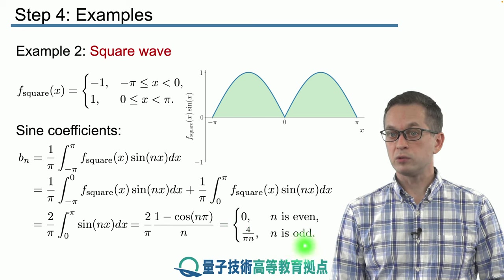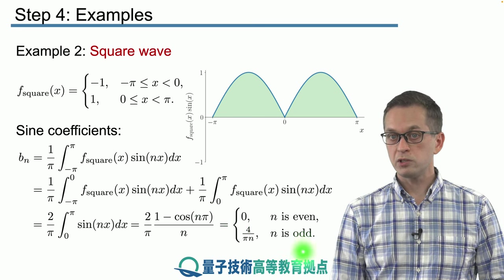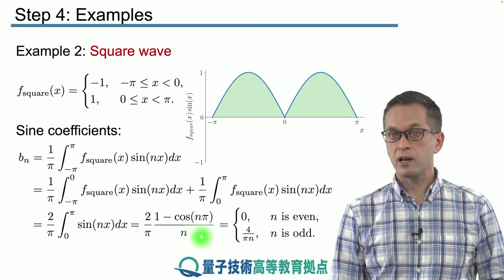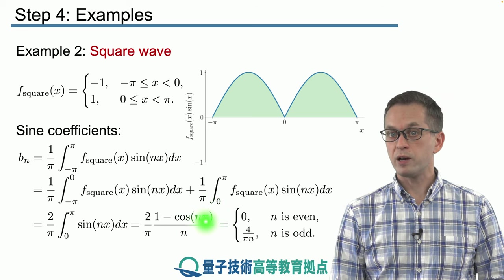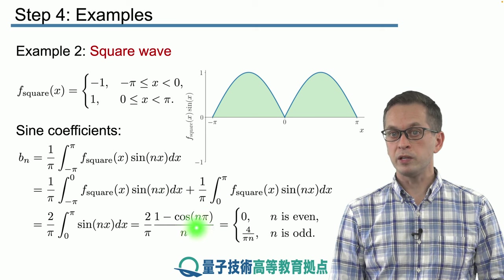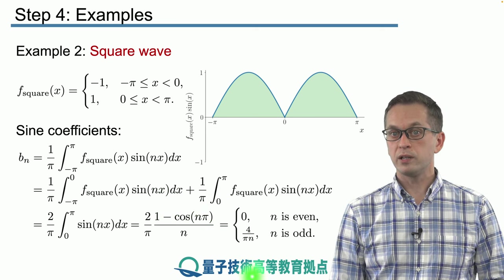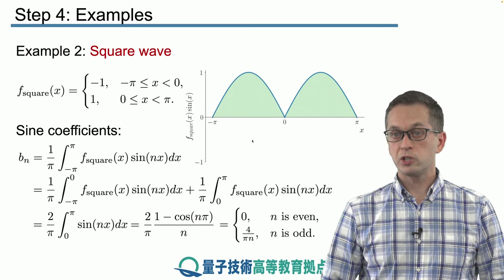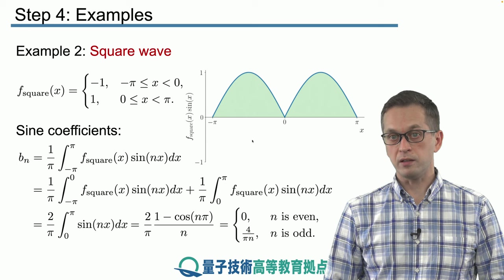Whereas when n is an odd integer, then here cosine of π, cosine of 3π, this will be equal to 2. Therefore the entire integral evaluates to 4 over πn, which is our coefficient bn.